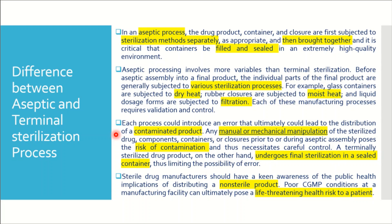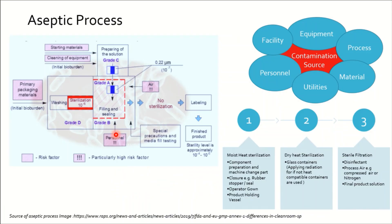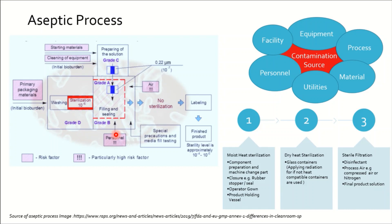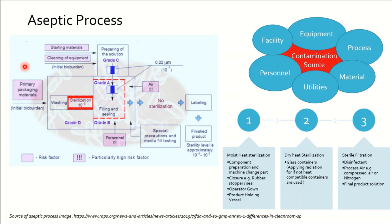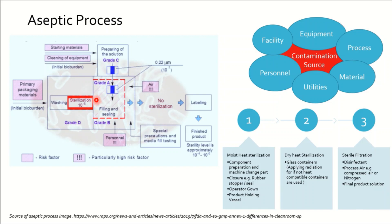We can see the demonstration of the aseptic process. It is similar to terminal sterilization, but we need to ensure each and every input material is sterilized before being brought into the filling area. The packaging material will be washed, sterilized, and then come to the filling area. Similarly, the stoppering rubber bung and seal need to be separately sterilized and brought into the filling area.